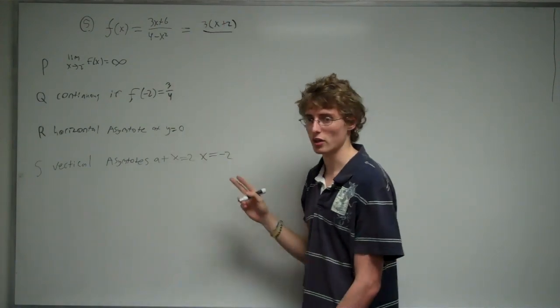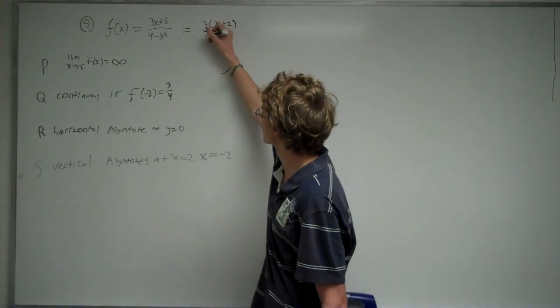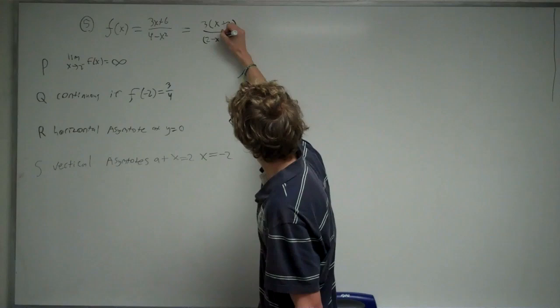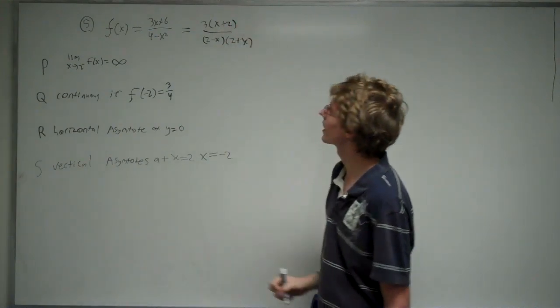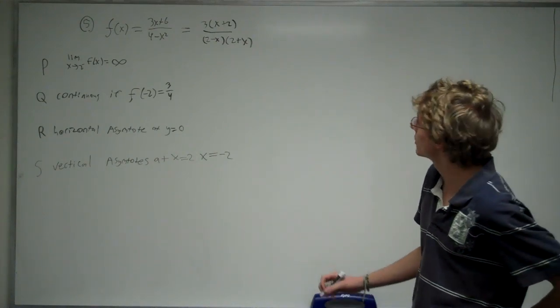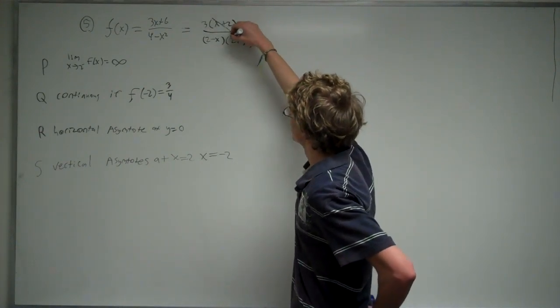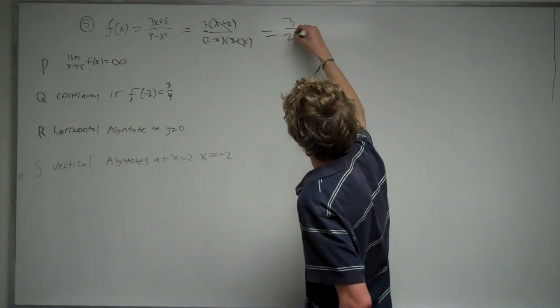From the bottom there, what we've got is a difference of squares, so we can factor that into (2-x) and (2+x). What you notice from here is that our (2+x) is going to cancel, and we're just left with 3 over (2-x).